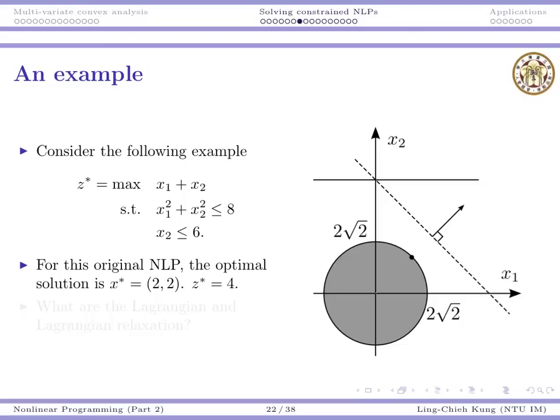So, let's illustrate the idea of Lagrangian with the following example. Suppose I want to maximize x1 plus x2, so I want to move in this direction, subject to that all the points must be within this circle, and x2 cannot be greater than 6.